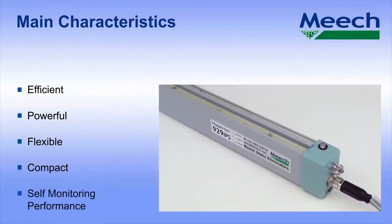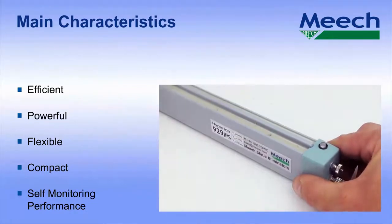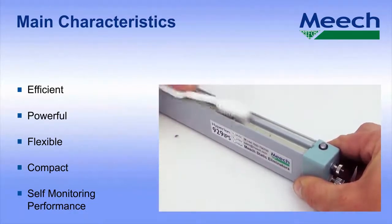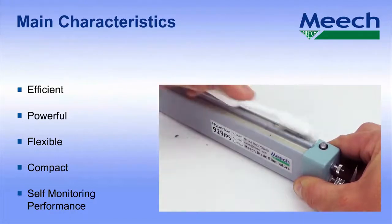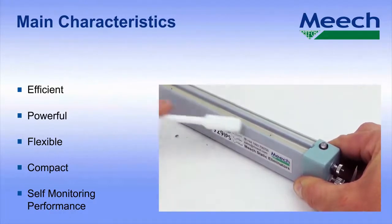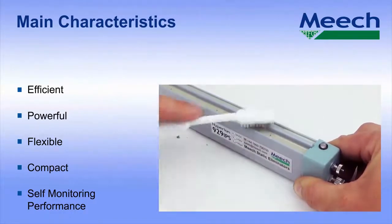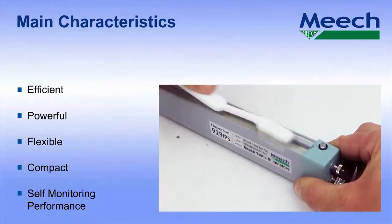Inbuilt ion current monitoring circuitry alerts the operator when the bar needs cleaning. Whilst our main competitors only provide a fault signal, the Meech 929 IPS also provides a cleaning alert via the local LED and an output signal on the M8 connector. The trigger level for the cleaning alert can be adjusted using a bar master programmer.